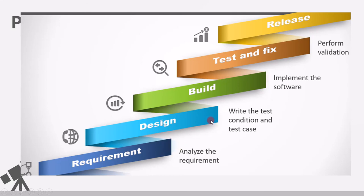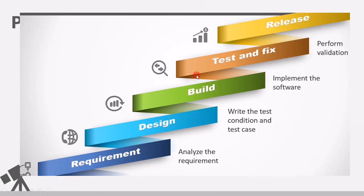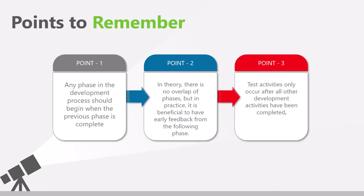Once the design phase is done, we start the build phase, then test, then release. While the model does not allow any overlaps, in practice it is better to have some overlap between phases. The final point: test activities only occur after all other development activities have been completed. We don't have any early feedback process in this model, which is a big drawback, and is the reason we usually choose the V-Model or the Agile development model instead.